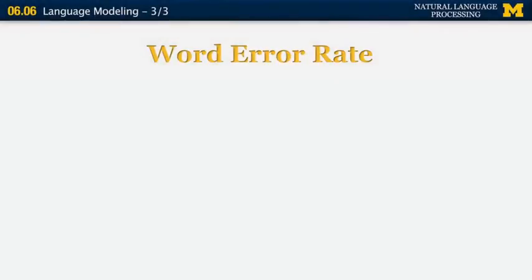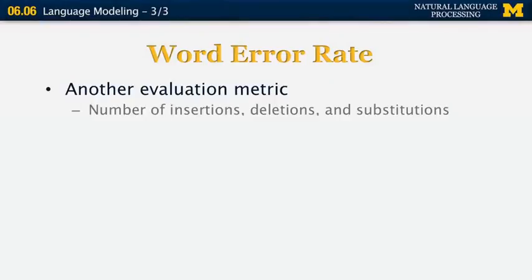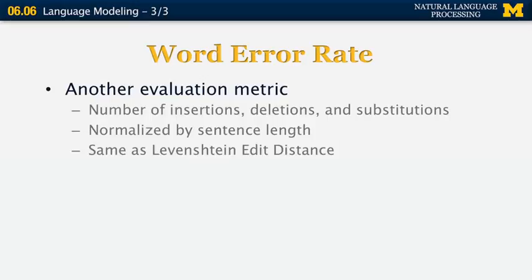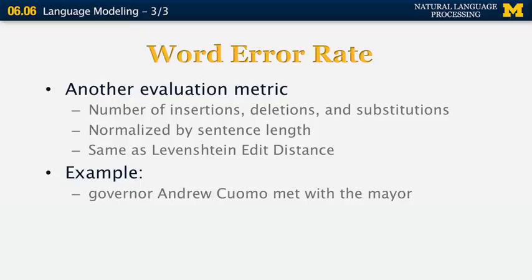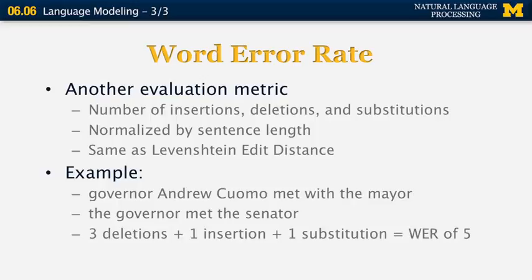Another metric for evaluating language models is the word error rate. It equals the number of insertions, deletions, and substitutions between two strings — very similar to the Levenshtein edit distance — normalized by sentence length. For example, take 'governor Andrew Cuomo met with the mayor' and 'the governor met the senator.' There are three deletions (Andrew, Cuomo, with), one insertion (the word 'the' at the beginning), and one substitution (mayor → senator). That gives a word error rate of five, and a normalized word error rate of one.